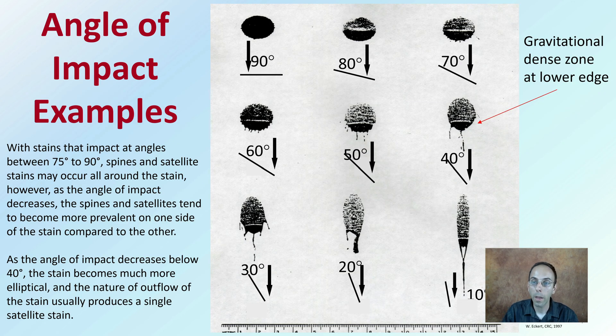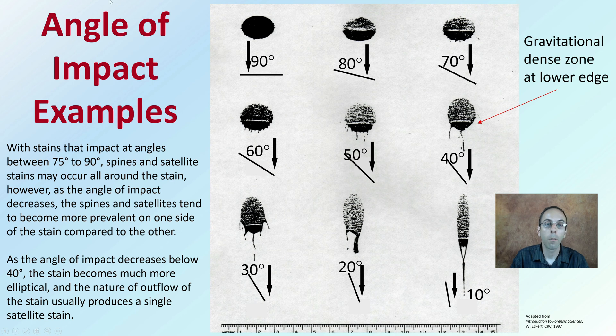Looking at angle of impact examples here, we can see that 90 degrees is kind of flat, and we're increasing at 80, 70, 60, 50, all the way to like 10 degrees. With stains that impact at angles between 75 and 90 degrees, spines and satellite stains occur all around the stain. However, as the angle of impact decreases, the spines and satellites tend to become more prevalent on one side of the stain compared to the other.